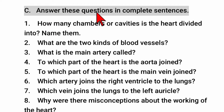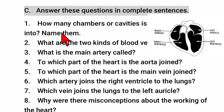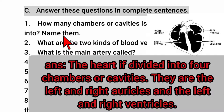These questions are about incomplete sentences. How many chambers or cavities does the heart have? Is the heart divided into chambers? The heart is divided into 4 chambers or cavities. These are the left and right auricles, and the left and right ventricles.